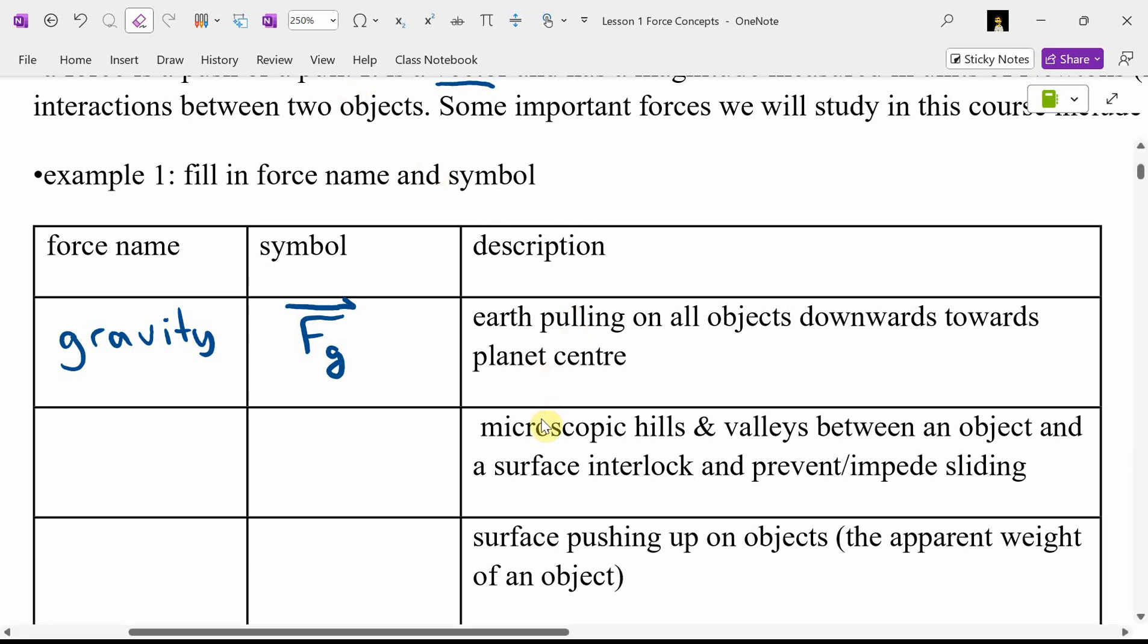What was the force that could be described as microscopic hills and valleys between an object and the surface that interlock and prevent or impede sliding? What was that one? Yeah, that one was friction.